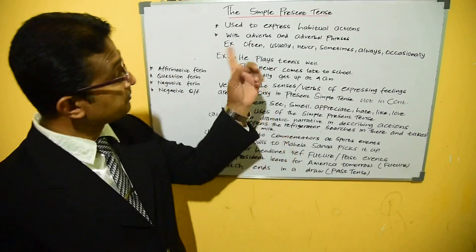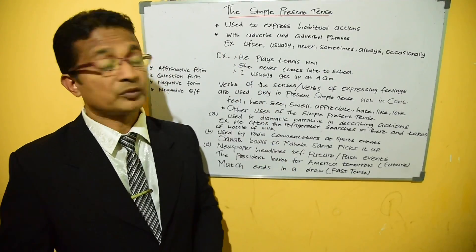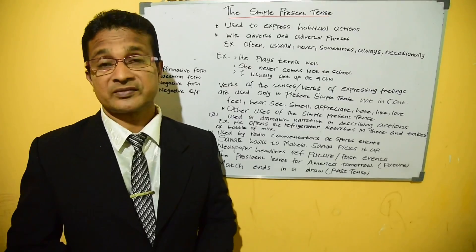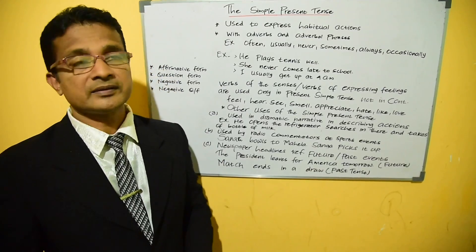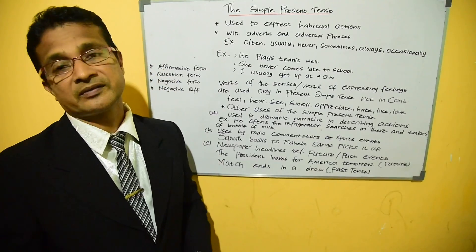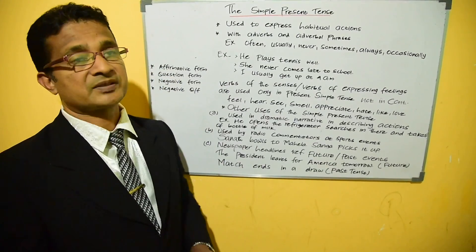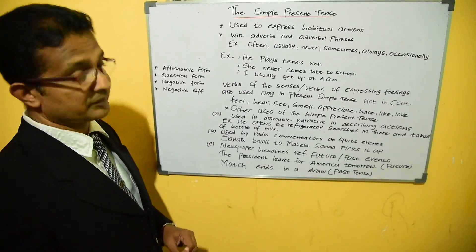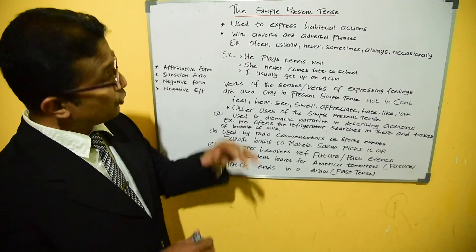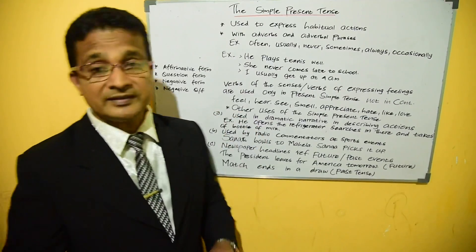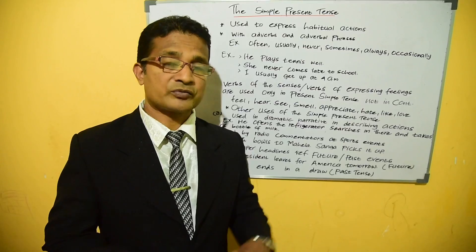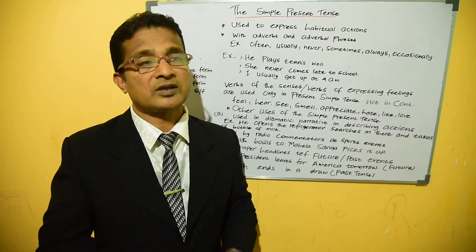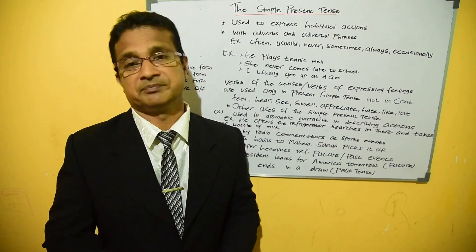Number one: the simple present tense. Number two: present continuous tense. Number three: present perfect tense. And the last is present perfect continuous tense. In order to study these grammar lessons, you also need to remember what I talked to you about - a verb.